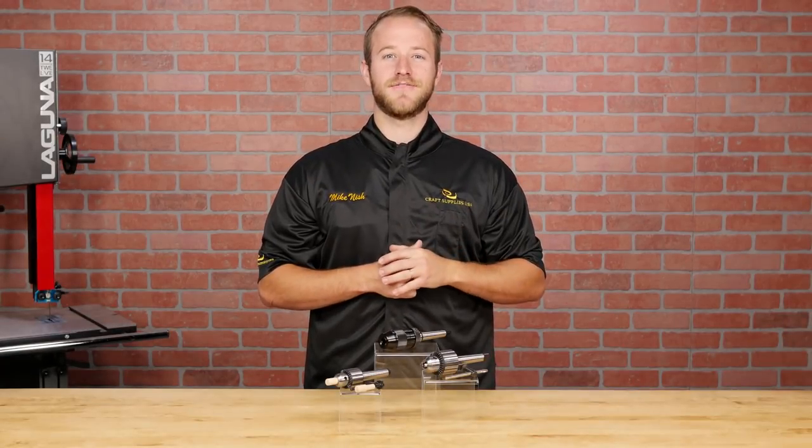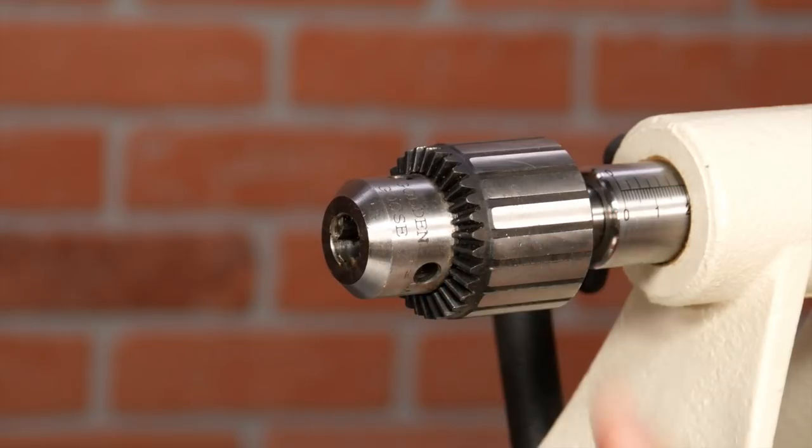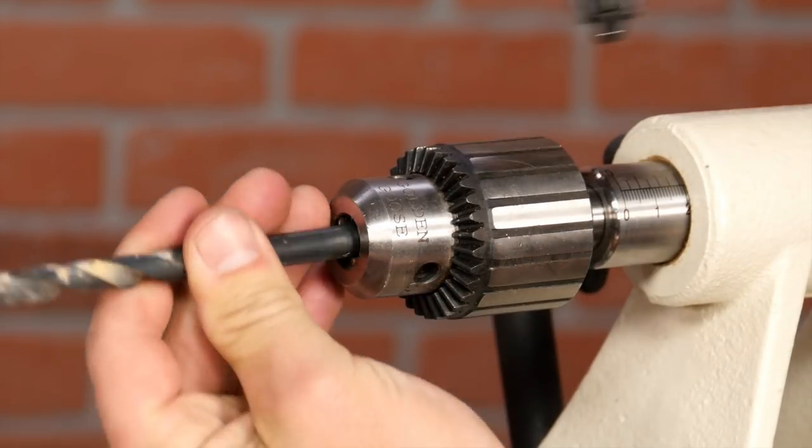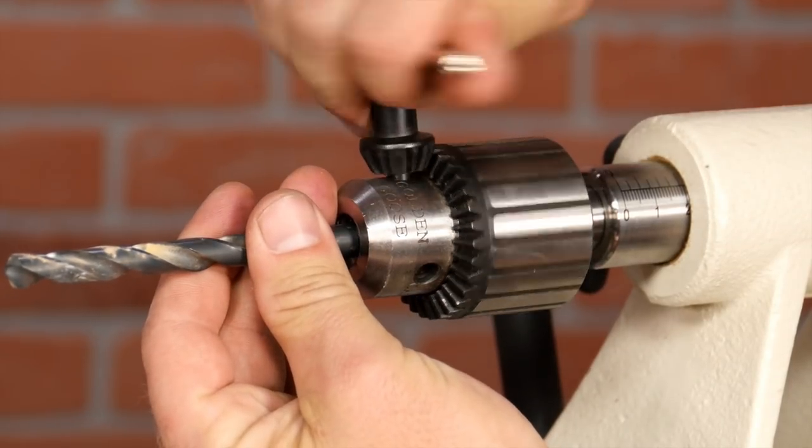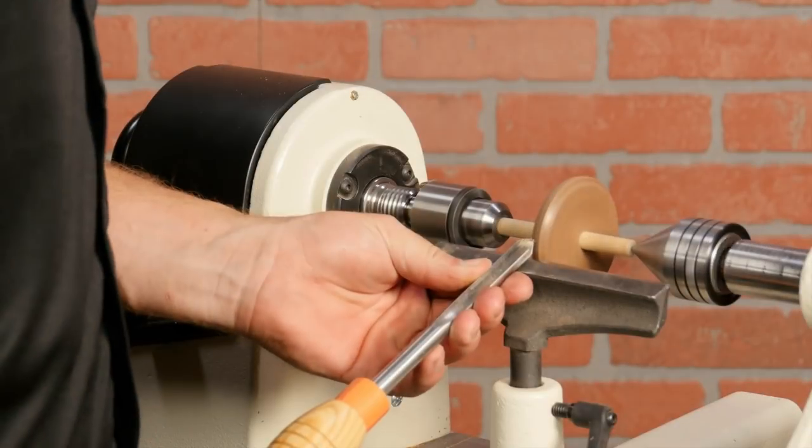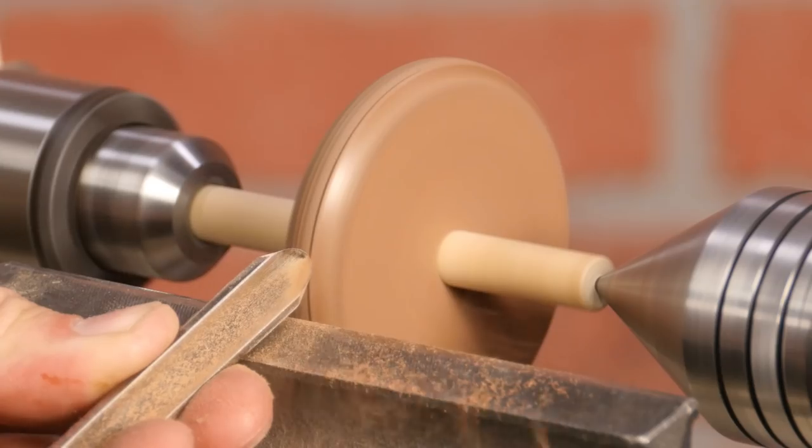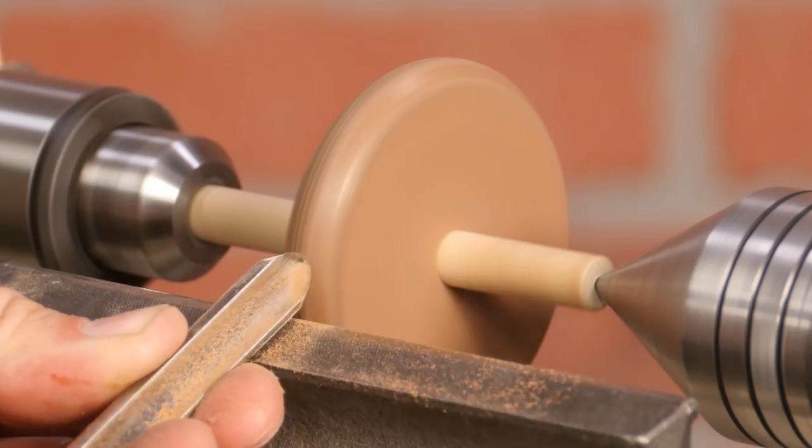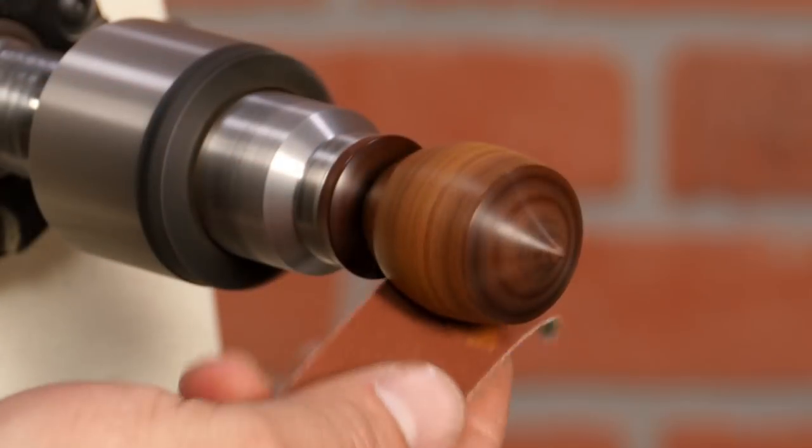Drill chucks are a must-have accessory for your lathe. When inserted into the morse taper of your tail stock, they allow your lathe to drill very accurate holes. And when used in the headstock, you can easily grip small projects like spinning tops and bottle stoppers.